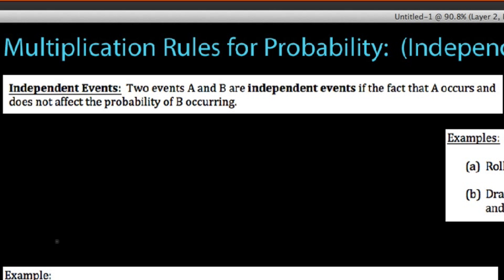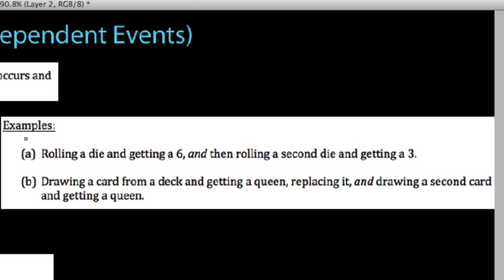Or believe it or not, no matter how many times people want to argue this, game two of the World Series does not affect game three. Maybe people will argue psychologically, but each game's outcome is independent of the other game. Examples of this would be rolling a die and getting a six and then rolling a second die and getting a three. These two events would be independent of one another.